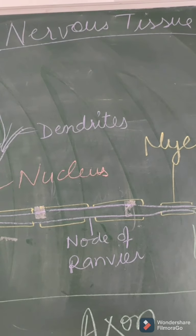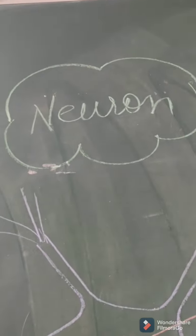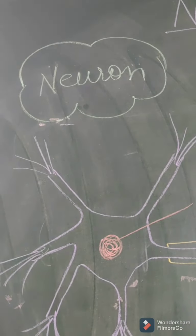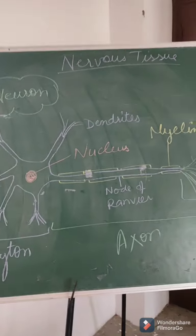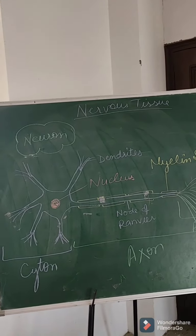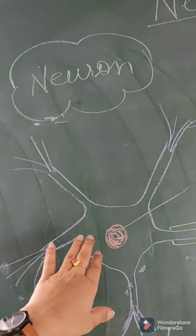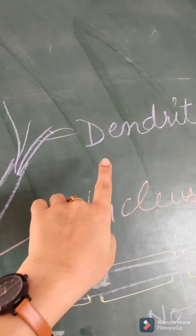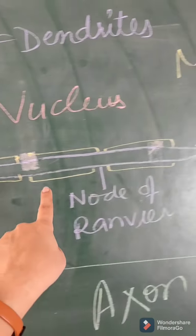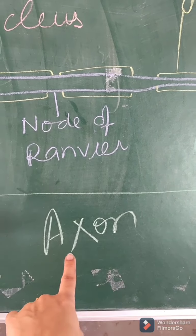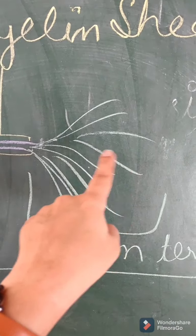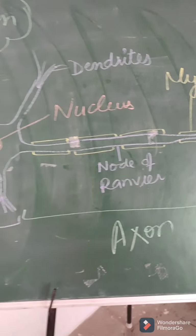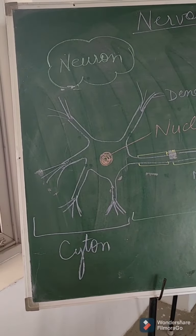The next tissue is nervous tissue. In nervous tissue we have nerve cells, also known as neurons. Only the structure of the neuron is important here. The center portion of the cell is known as the cytone. It has quite small and numerous processes known as dendrites, and a single long process known as the axon. The ends of the axon further have tiny branches known as axon terminals. Inside the cytone we have a nucleus, labeled in pink.